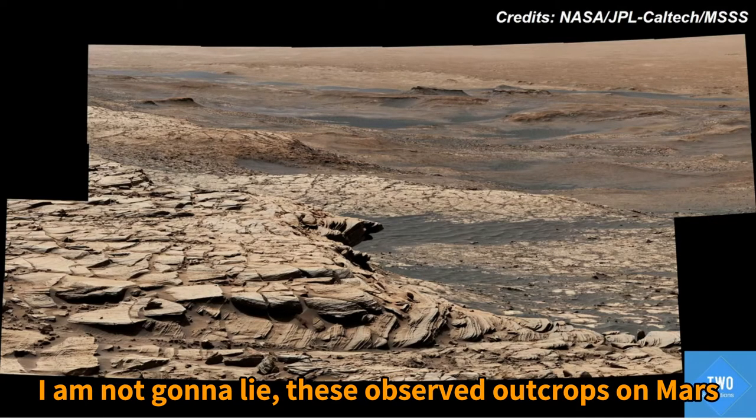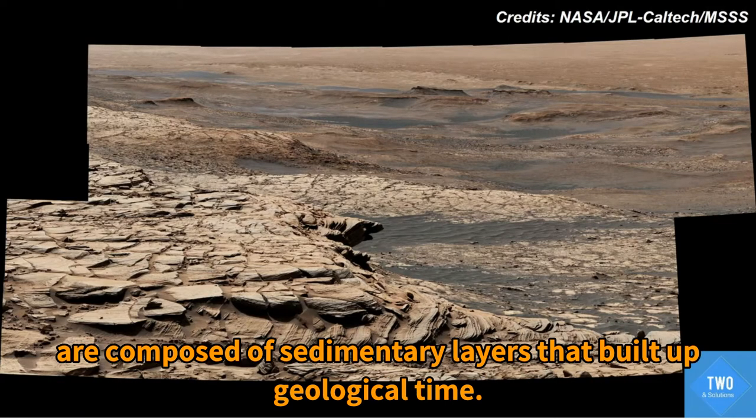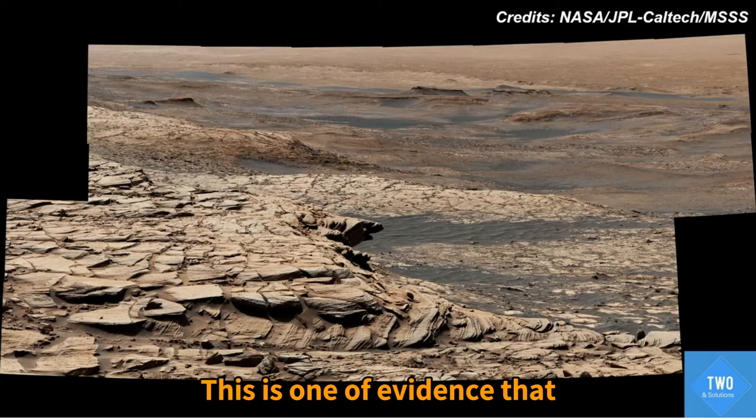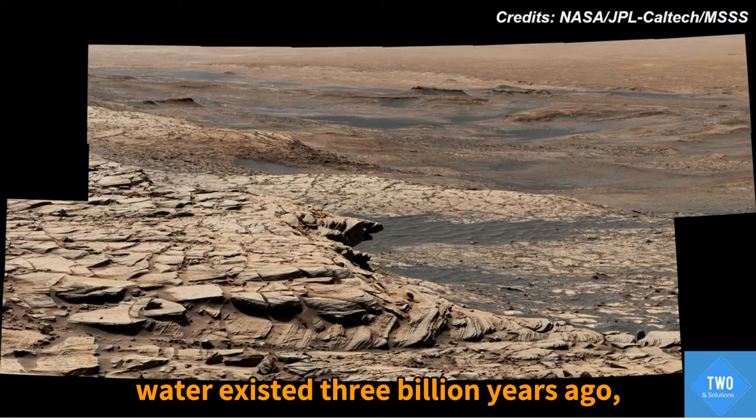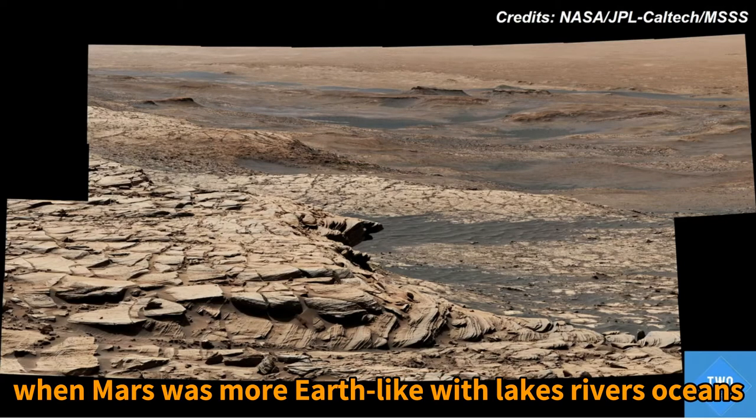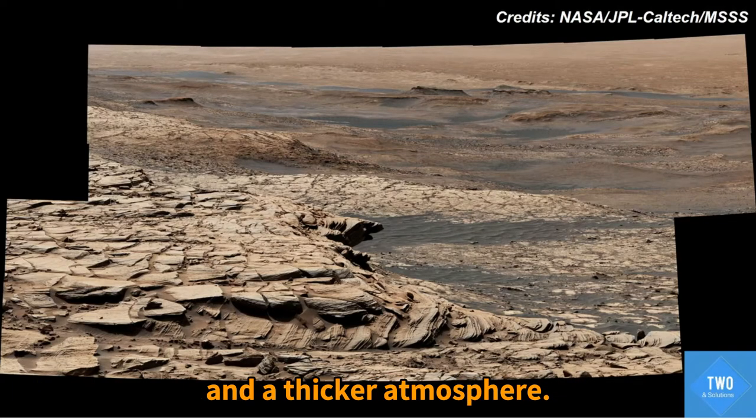This observed outcrop on Mars is composed of sediment layers that built up over geological time. This is one piece of evidence that water existed 3 billion years ago when Mars was more Earth-like with lakes, rivers, oceans, and a thicker atmosphere.